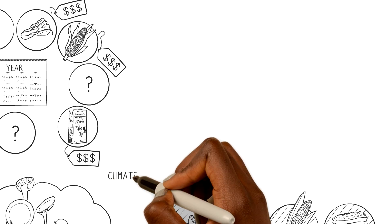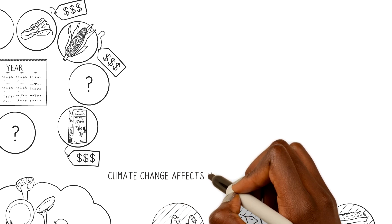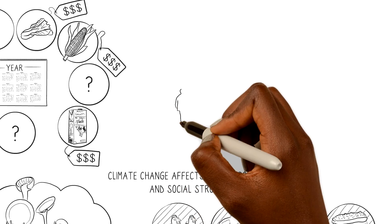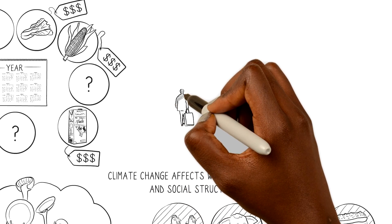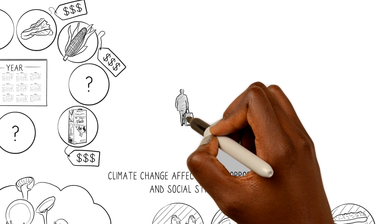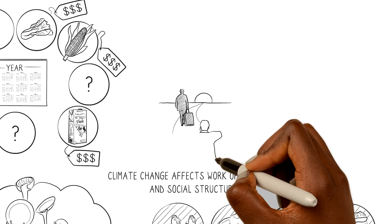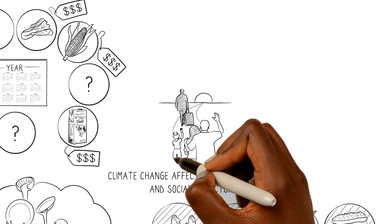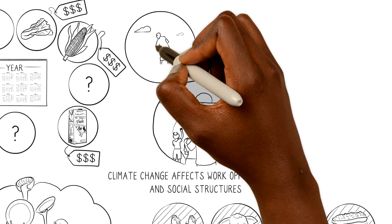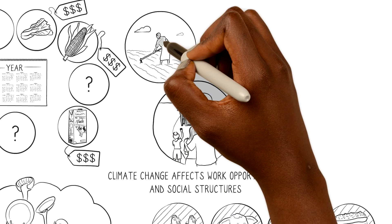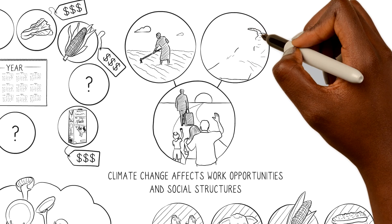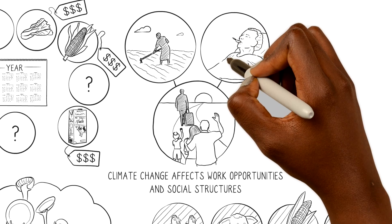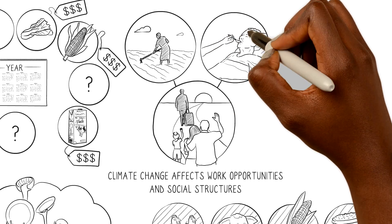Climate change affects work opportunities and social structures. Family members leaving home to work elsewhere increases the burden on those who stay behind to work the land and to care for and feed the young, old, or sick family members.